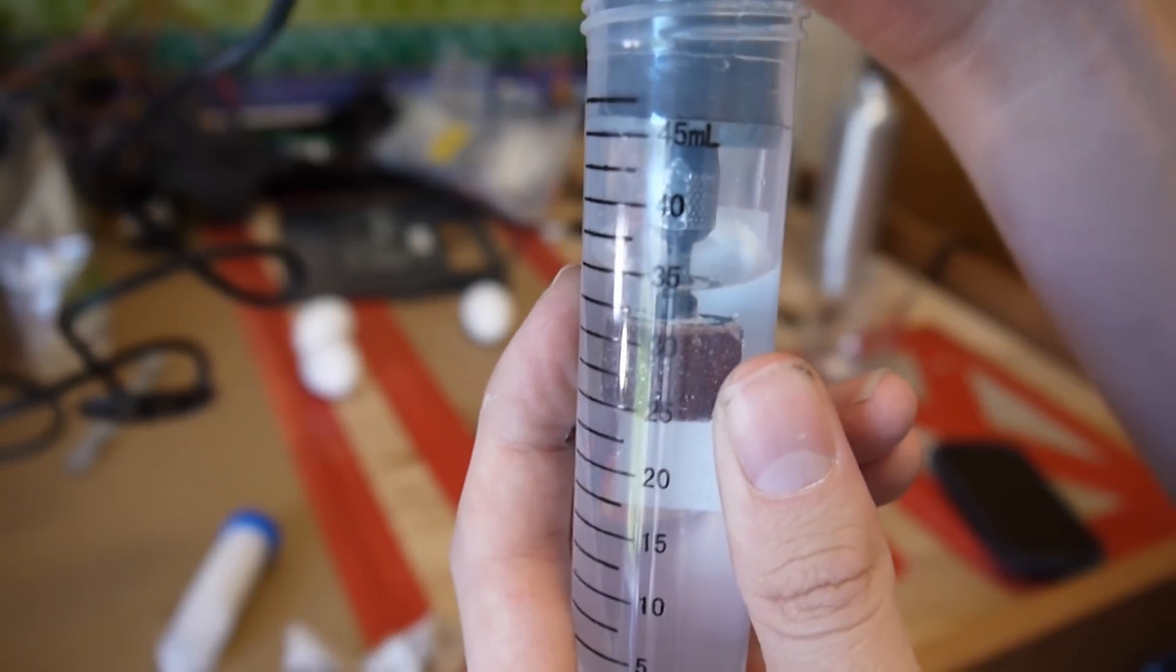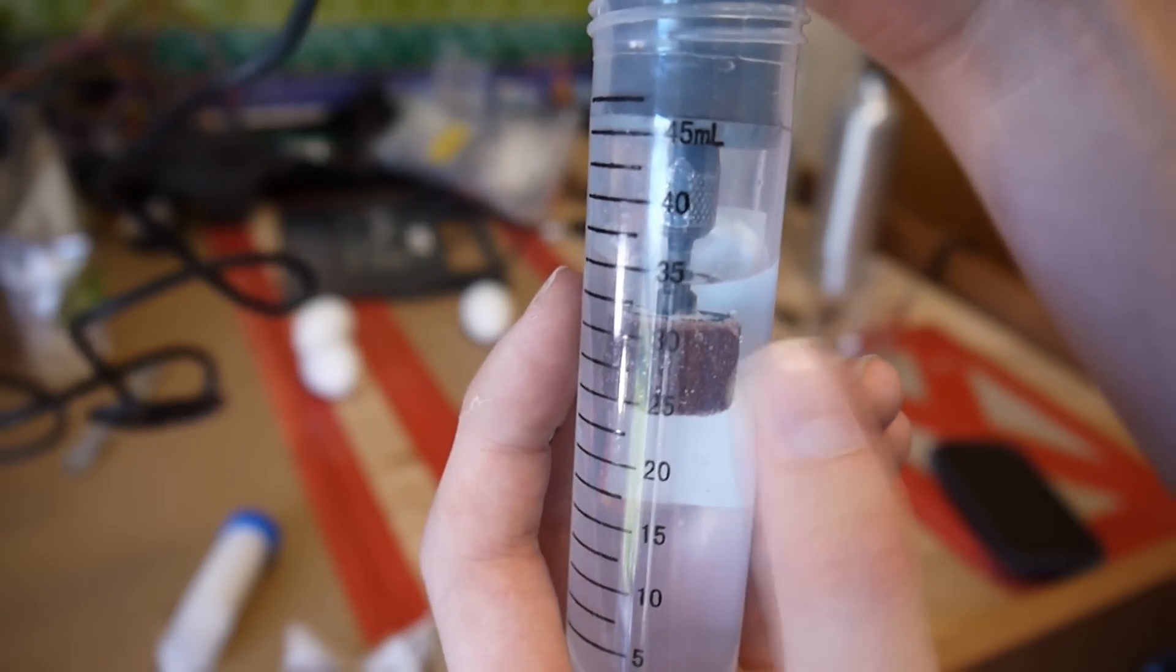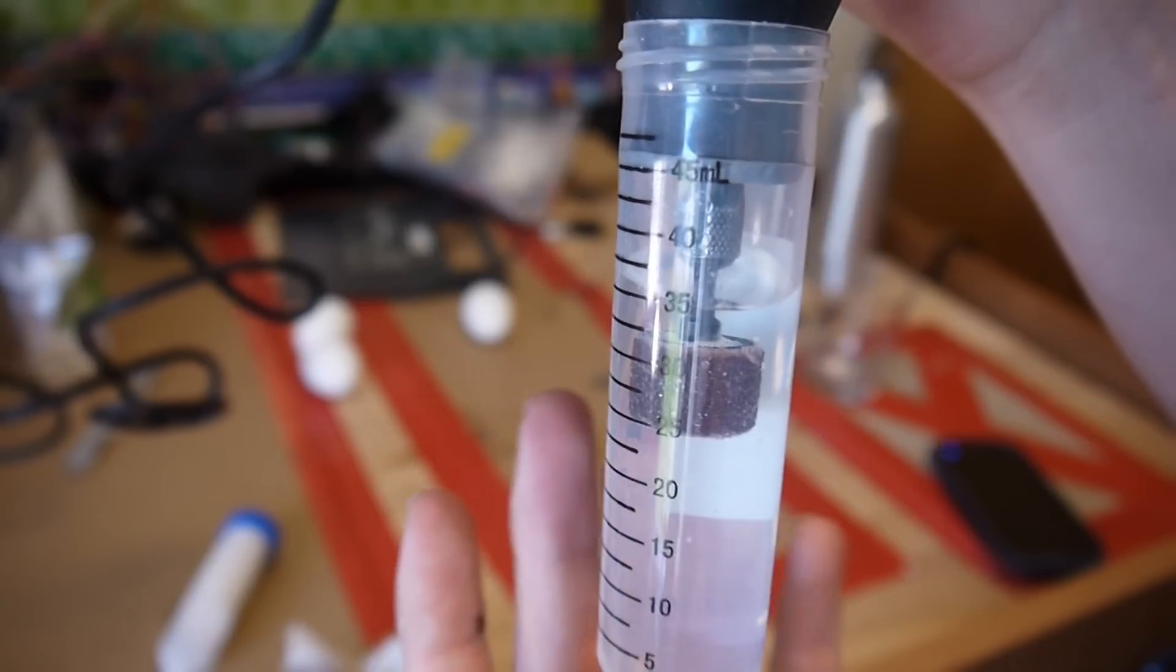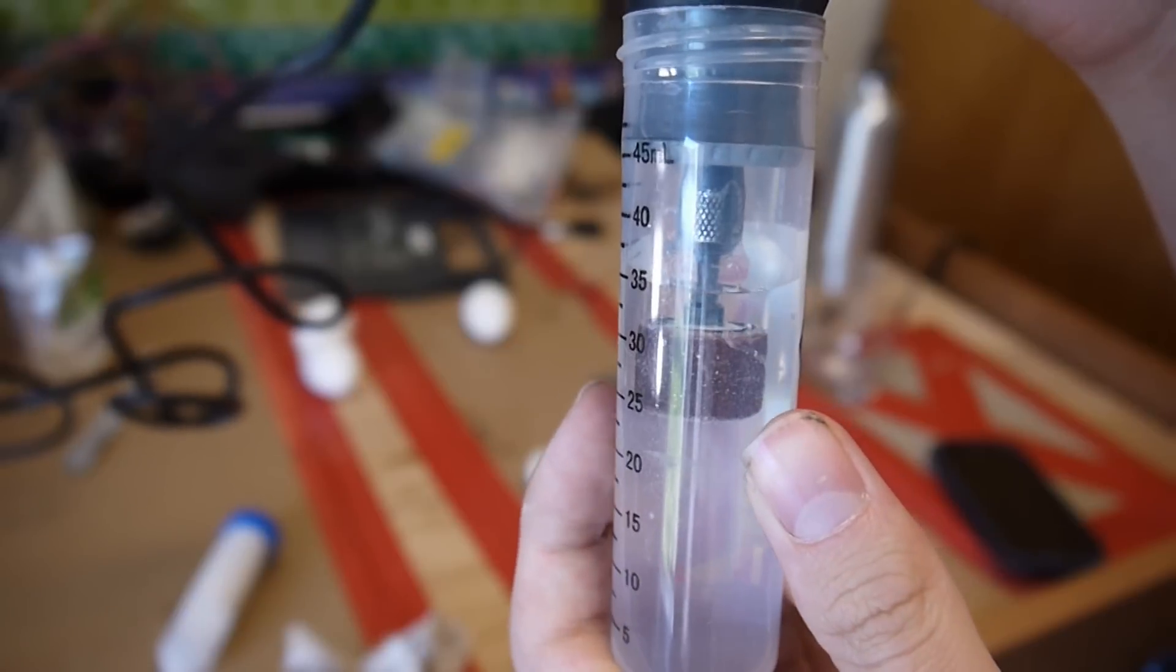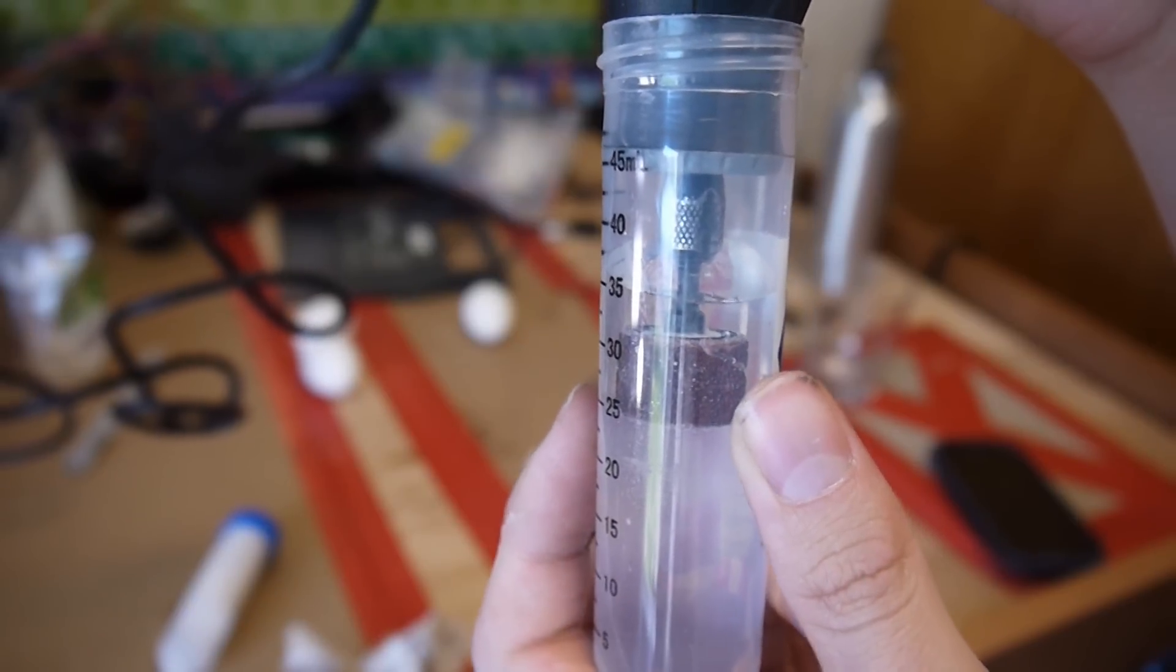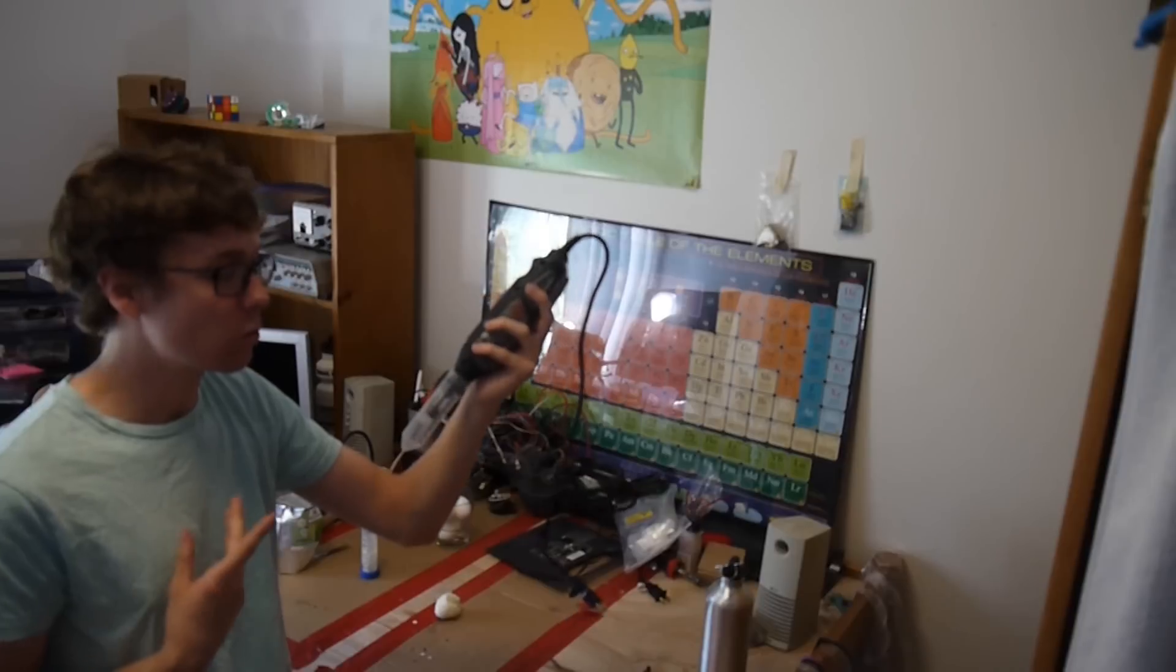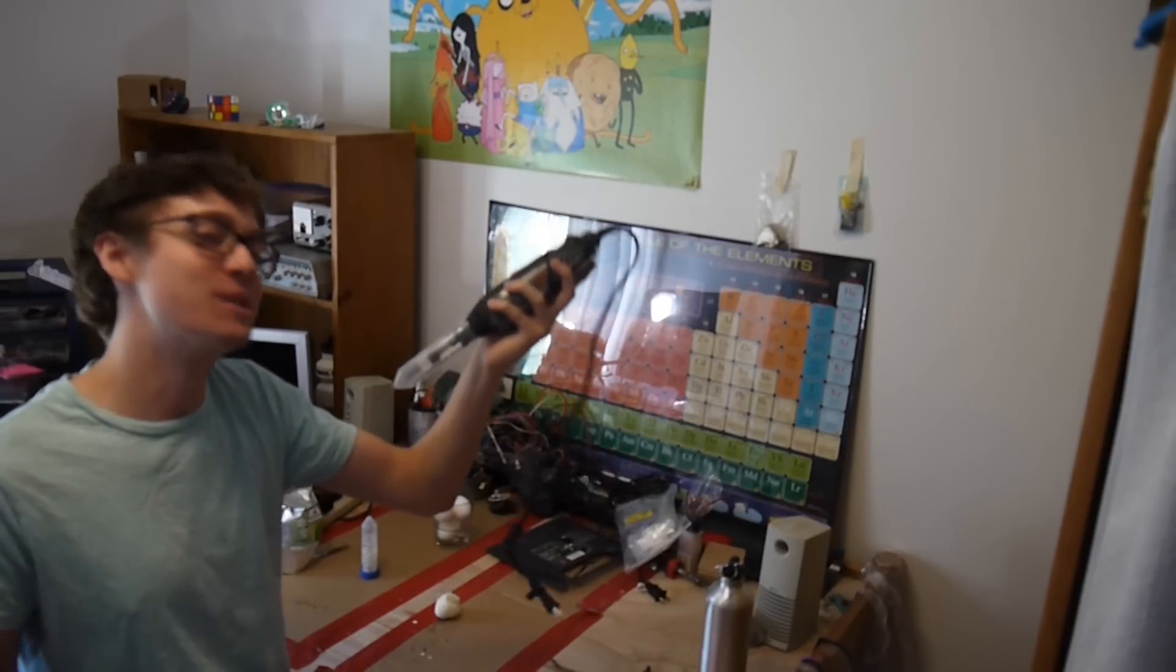What I want to try here is spinning this sanding drum very quickly inside of the solution and what I'm hoping is that the boundary between the solution and this sanding wheel will create those necessary shear forces. Will it work? I have no idea.